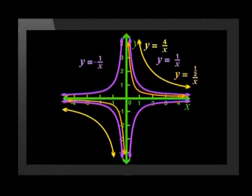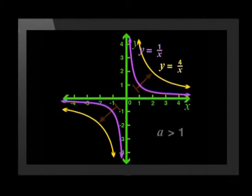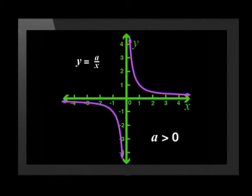Let's put all the things we have found so far together. We have compared the parent graph y equals 1 over x with three other graphs that had a equal to 4, a equal to a half, and a equal to negative 1. We found that if a is bigger than 1, the new graph is pulled away from the x and y axes. And if a is smaller than 1, but bigger than 0, the new graph lies closer to the axes than the parent graph.